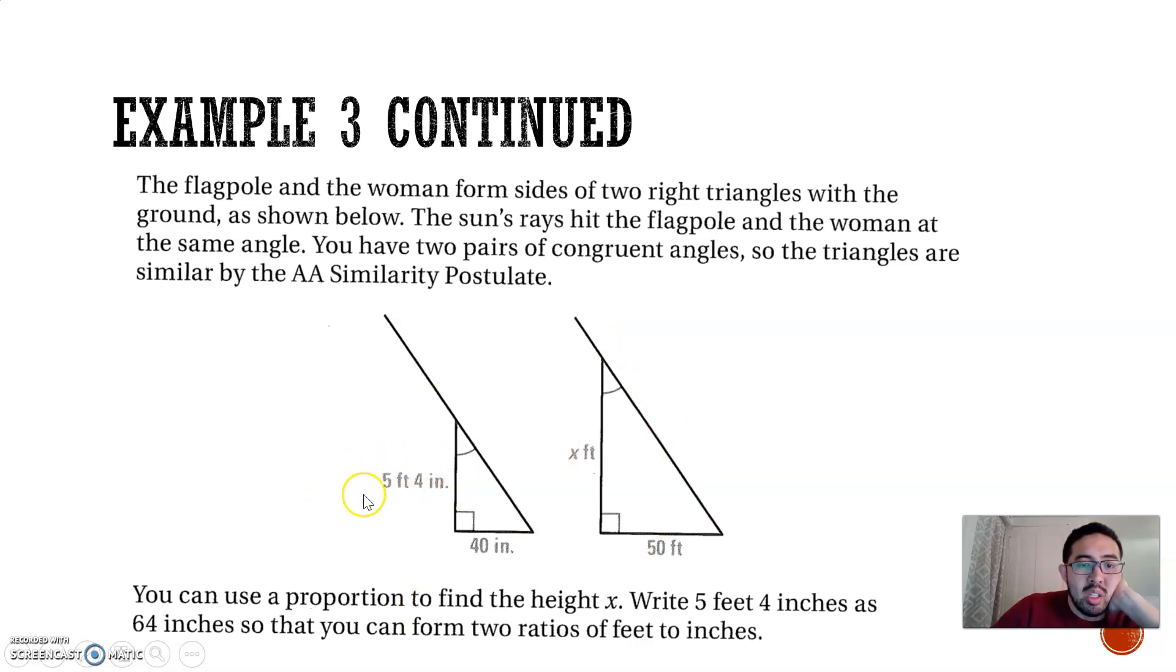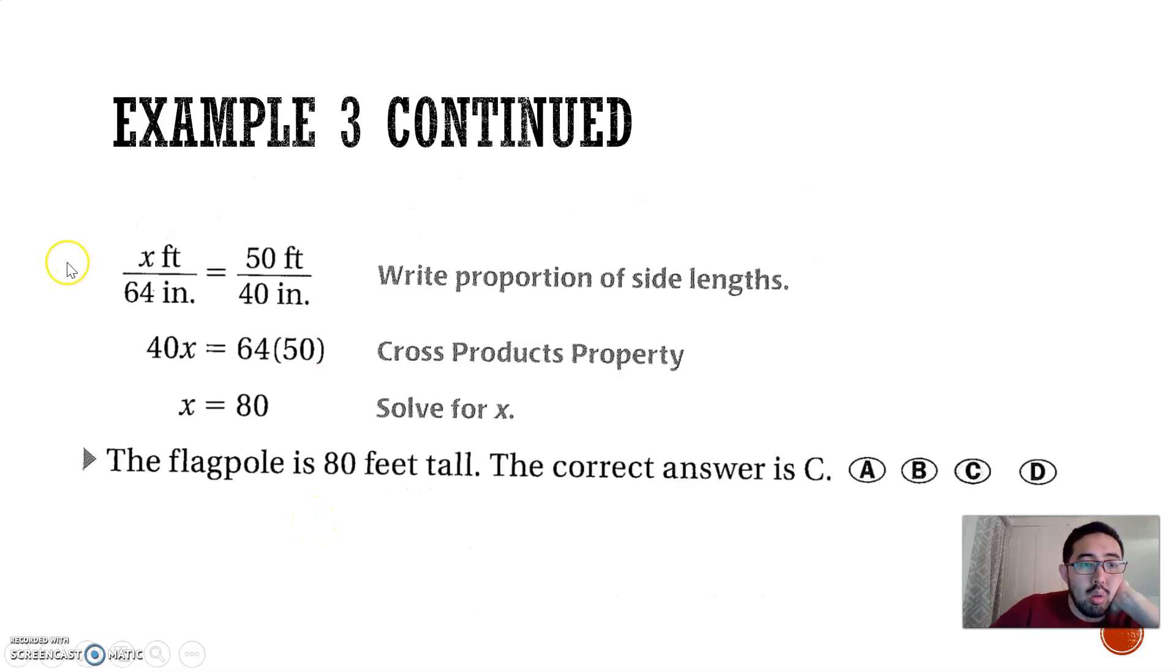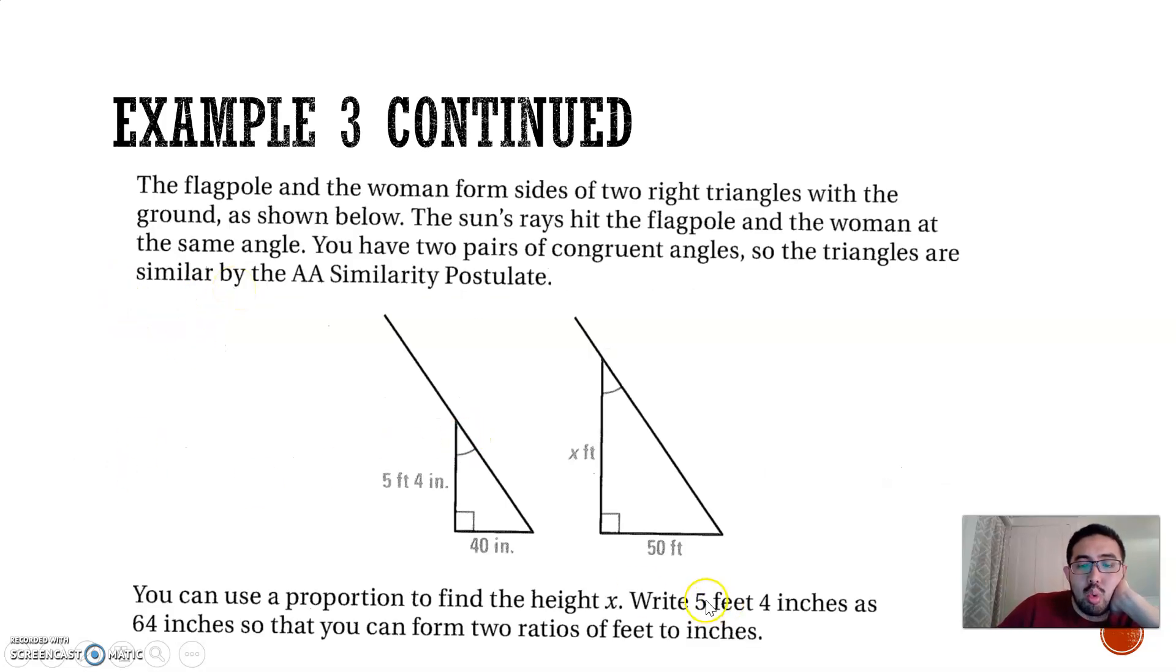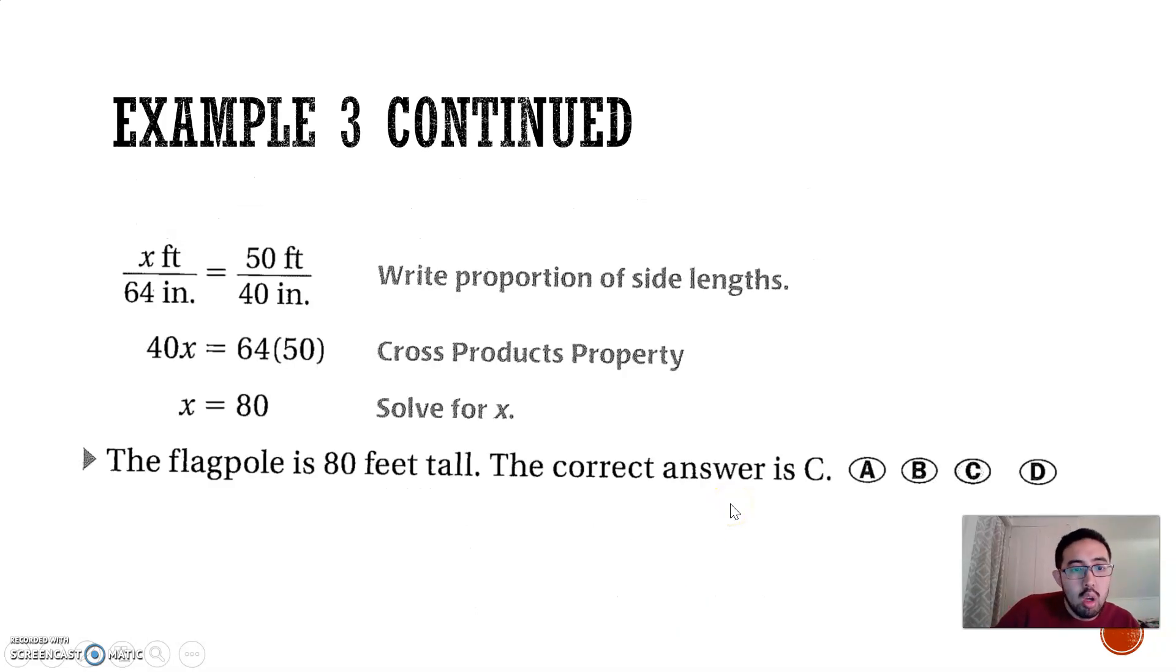But the first thing I need to do is I need to convert the 5 foot 4 inches into inches. So, it's 64 inches. How do I convert that? Well, they're 12 inches in a foot. 12 times 5 is 60. 60 plus 4 is 64. So, the X feet, the flagpole, is X feet over the height of the woman. This is equal to the shadow versus the shadow here.